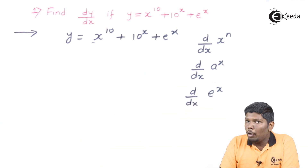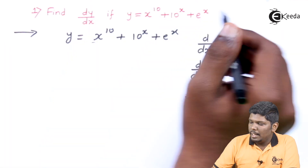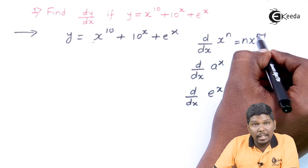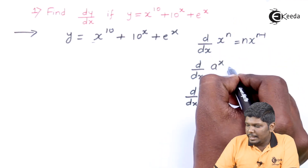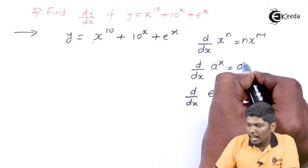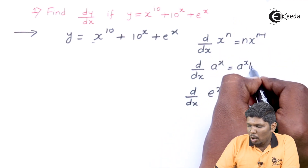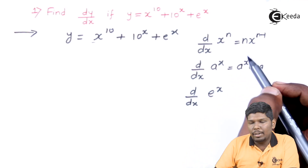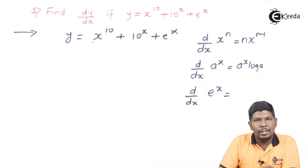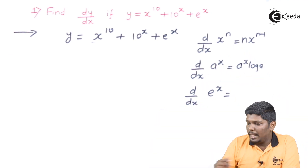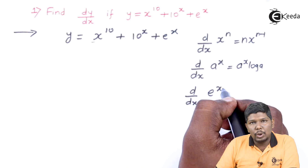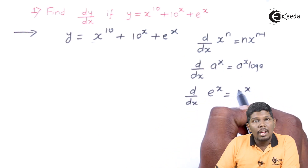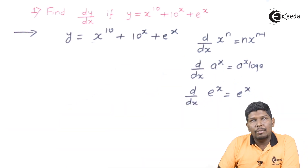The formula for the first part is n times x raise to n minus 1. For the second, the derivative of a raise to x is a raise to x times log a. The third formula, already seen in previous videos, is that the derivative of e raise to x is e raise to x. Now let us start with the sum.